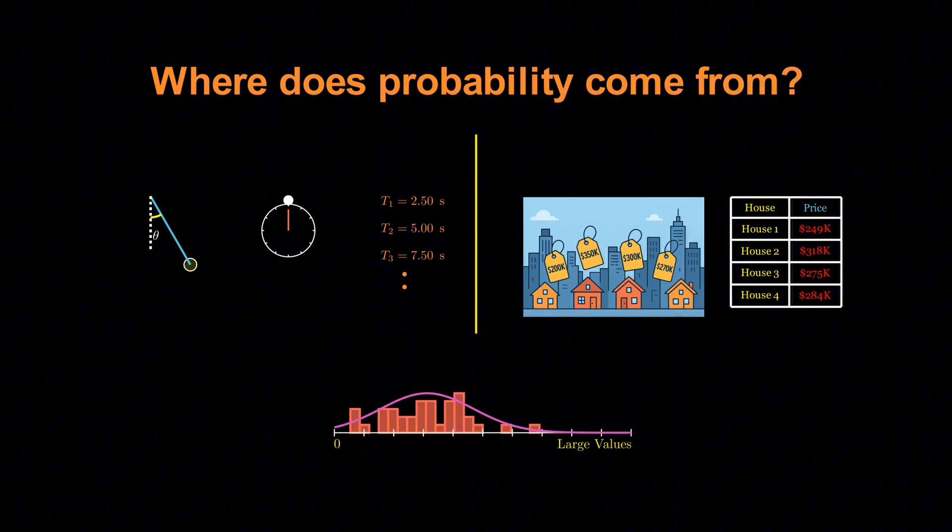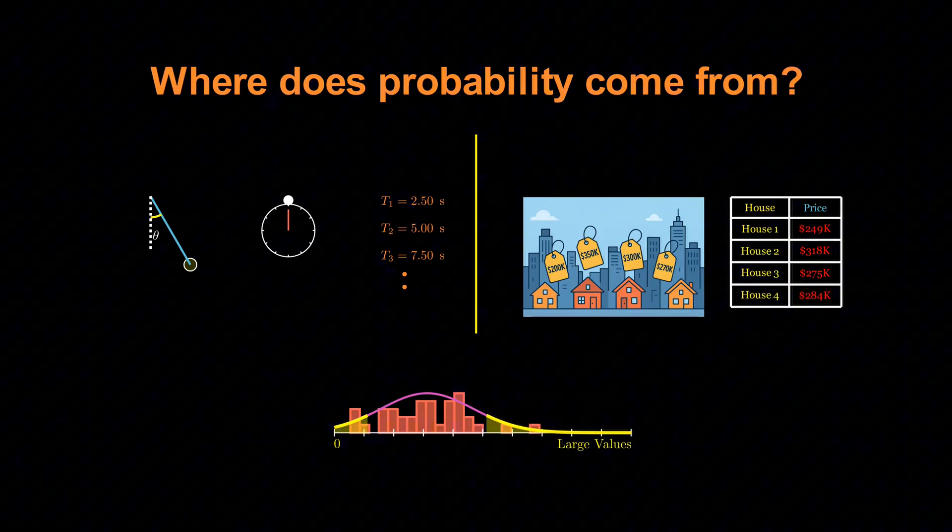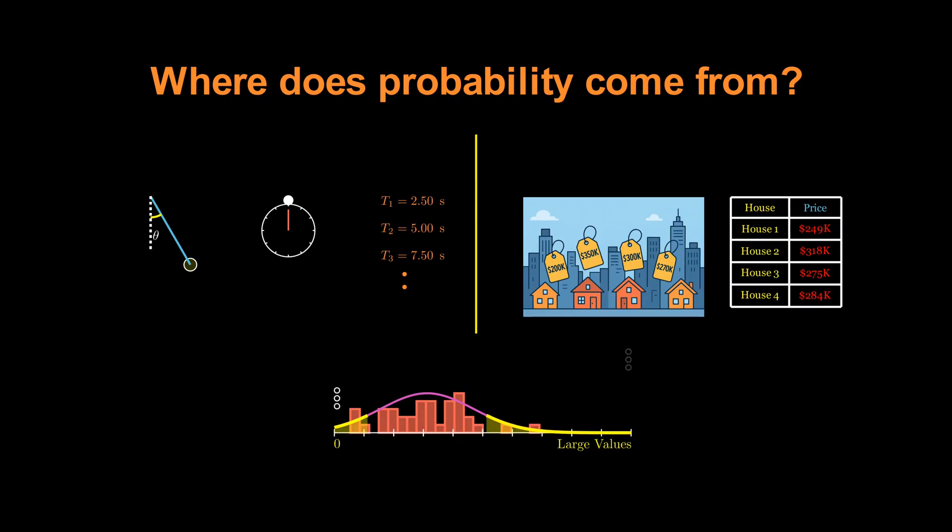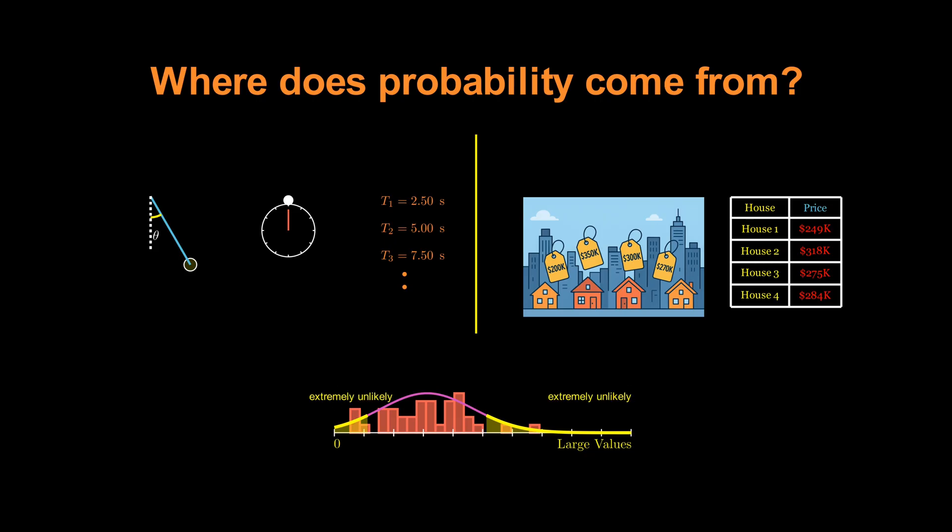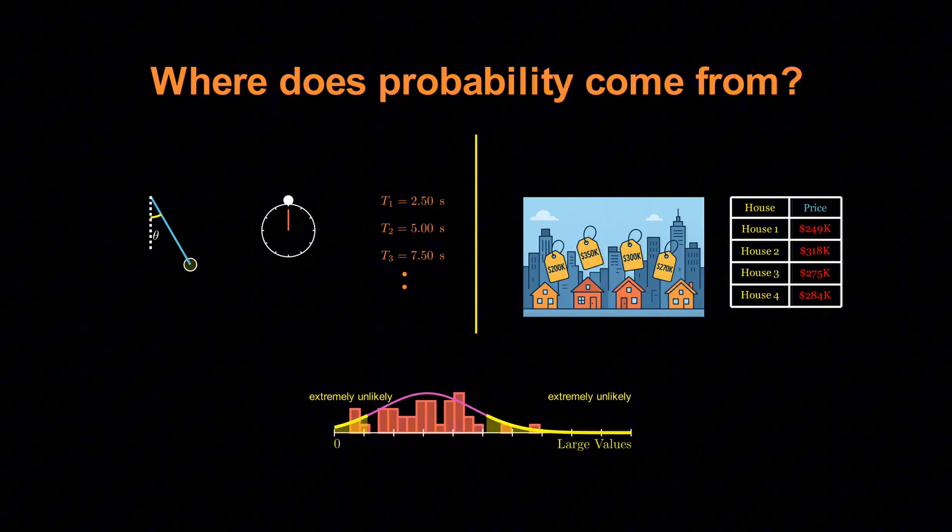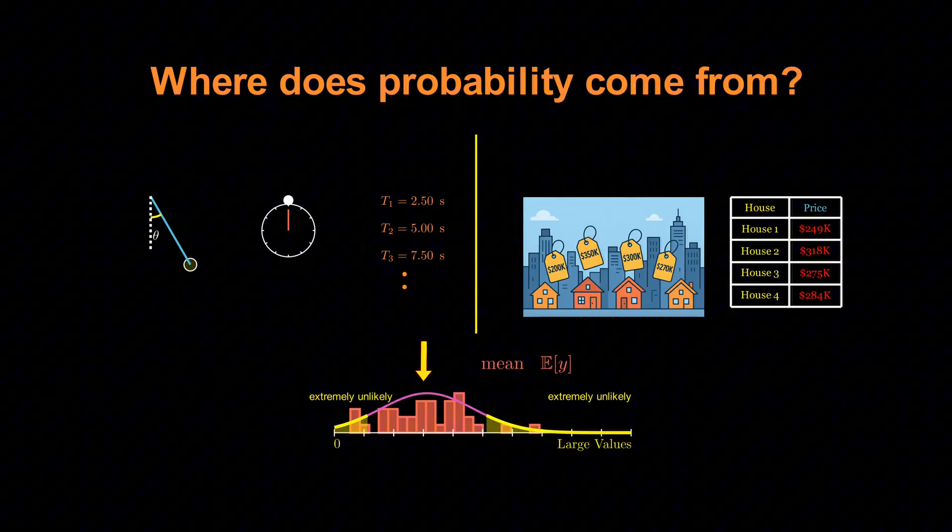In theory, the pendulum's period could be zero seconds or a million seconds, and the house price could be zero dollars or infinite. But those extreme values are astronomically unlikely. Instead, the distribution has a most probable value, the mean E of Y.